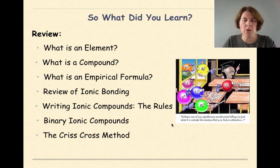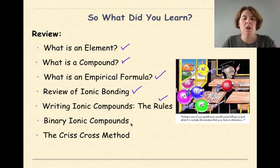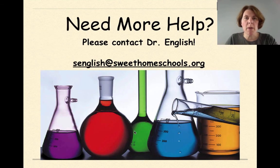So what did we go over in this tutorial? We reviewed what an element was. We talked about the definition of a compound. We introduced ourselves to the concept of an empirical formula. We did a tiny review of ionic bonding. We looked at the rules for writing ionic compounds. We introduced the concept of binary ionic compounds. And then we looked at the crisscross method. Need more help? Feel free to contact me. Have a great day. Take care.